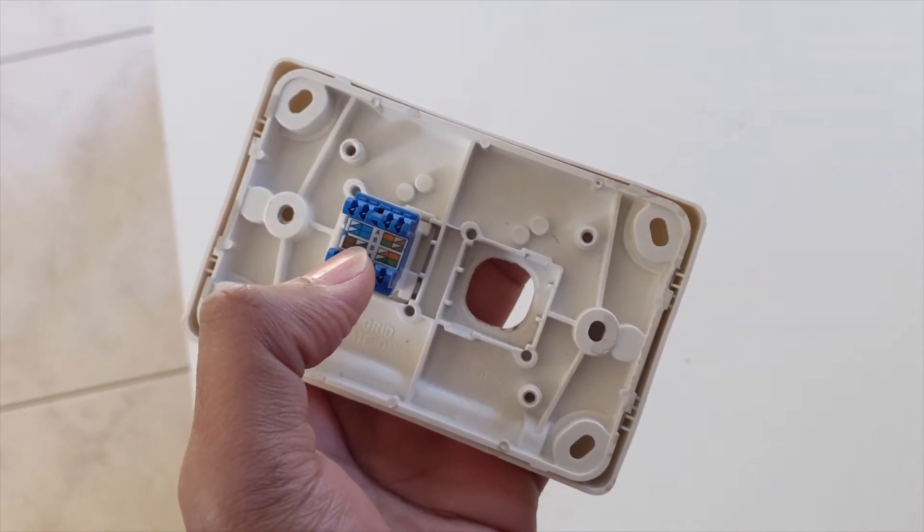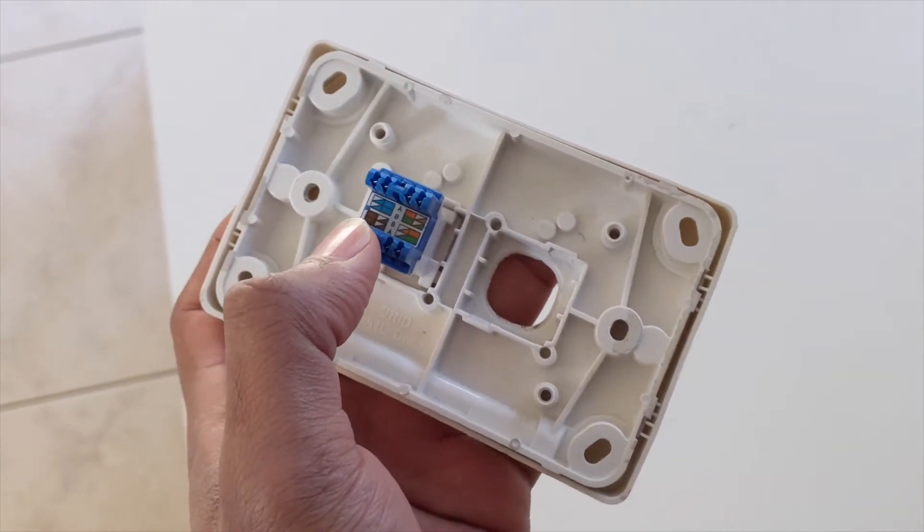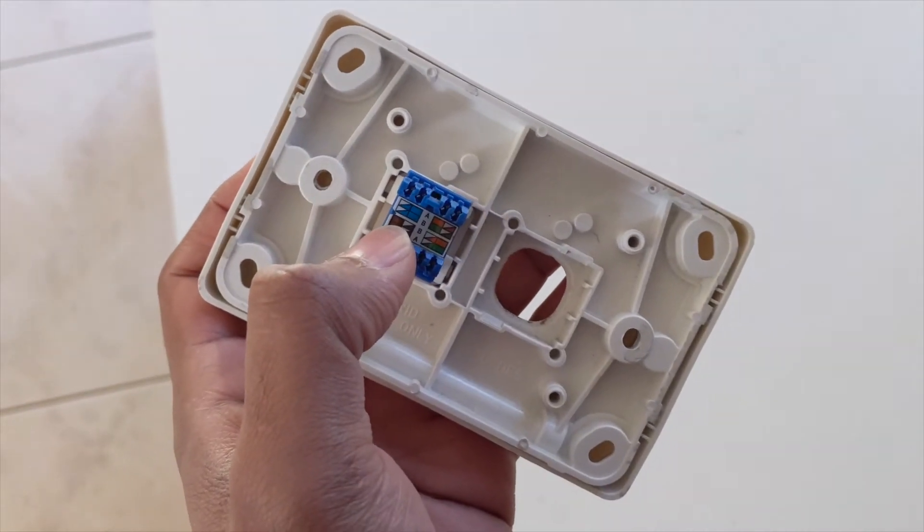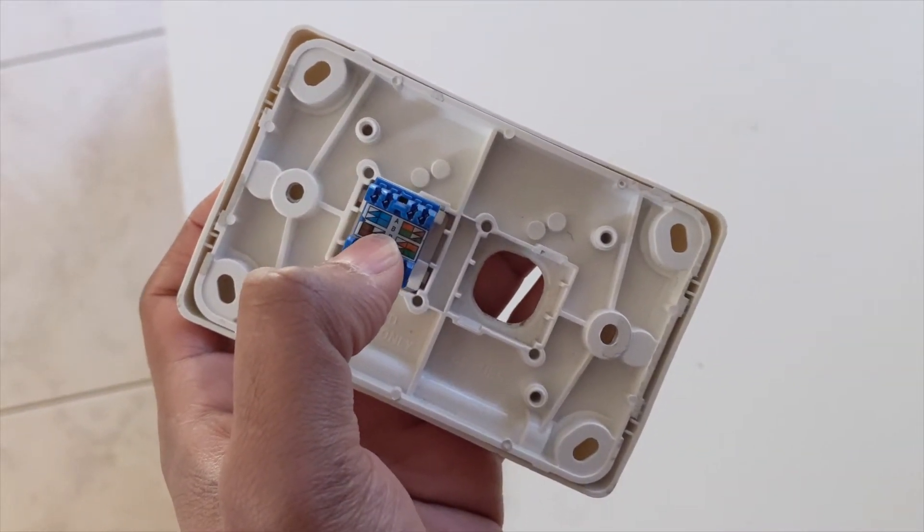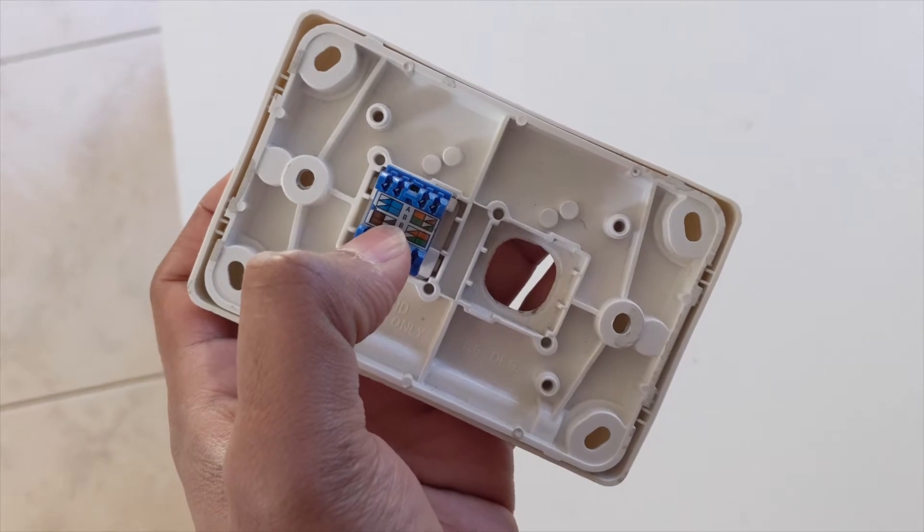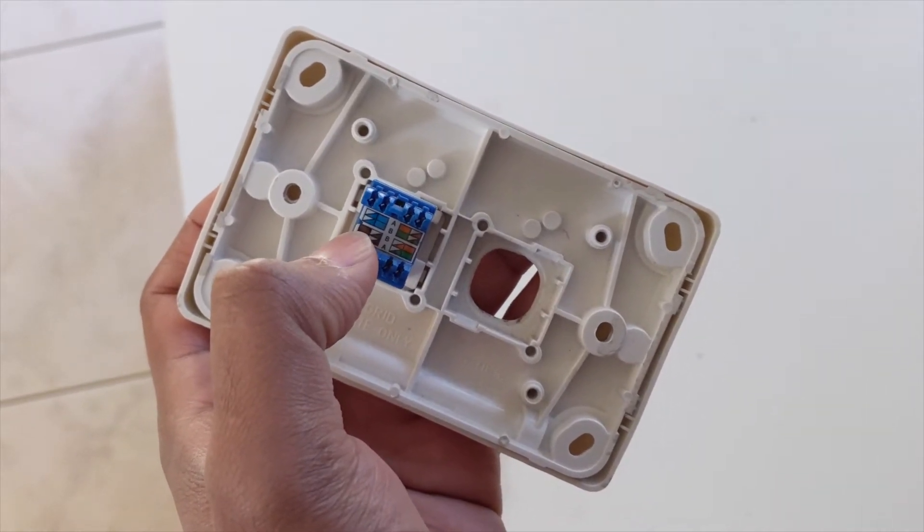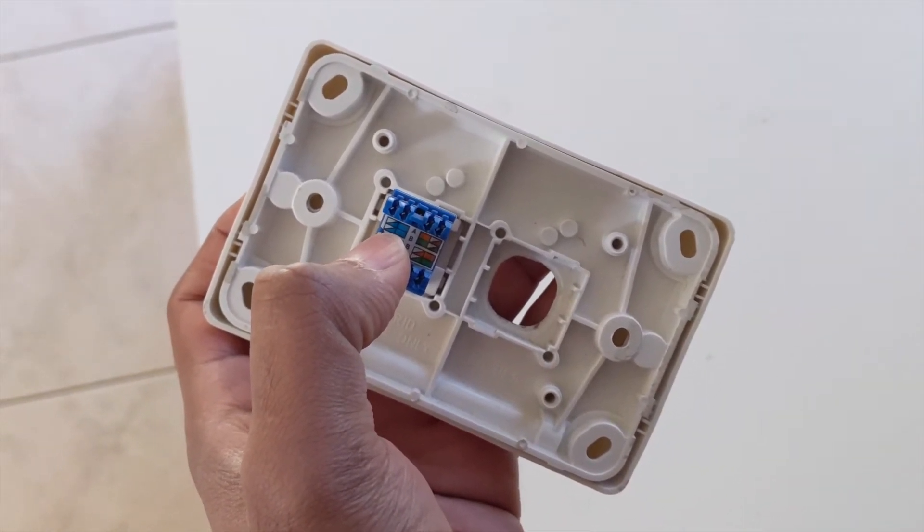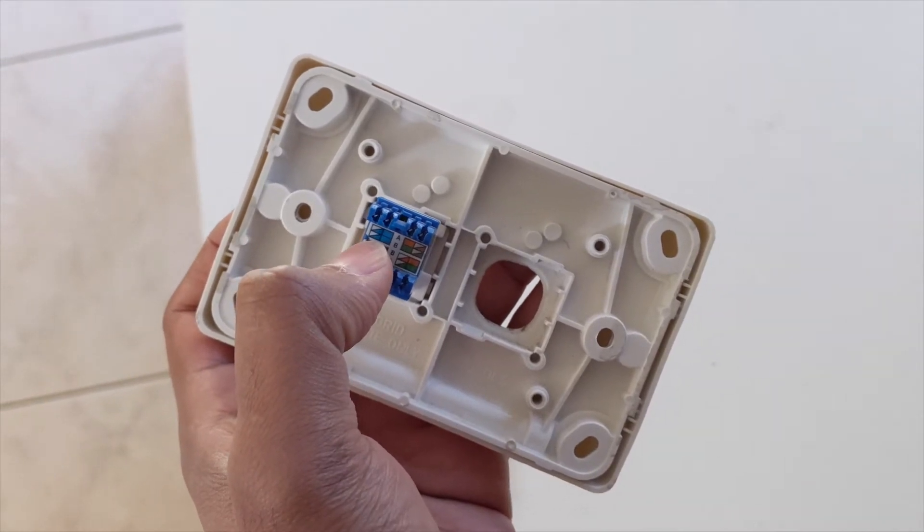When you pick up an Ethernet port and Ethernet wire, you can see the colors are brown-white, brown, blue, and blue-white. That's the B version.